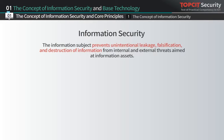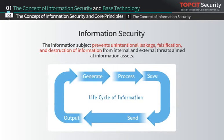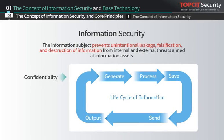Information security refers to the information subject's prevention of unintentional leakage, falsification, and destruction of information from internal and external threats aiming for information assets. In the entire lifecycle of information — from generation, processing, saving to sending and outputting — information security provides confidentiality to prevent information leakage, integrity to prevent information counterfeit or falsification, and availability to enable the authorized user to access information without interruption. These three elements are the core principles of information security.